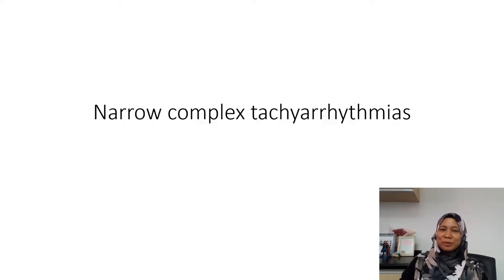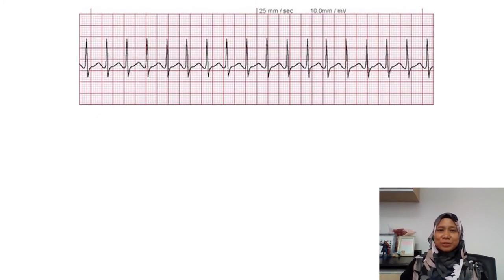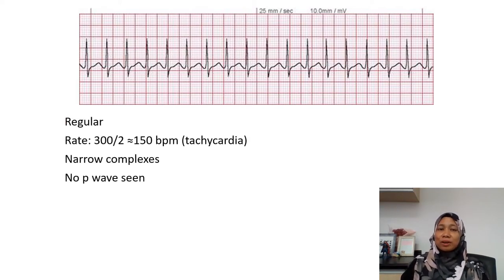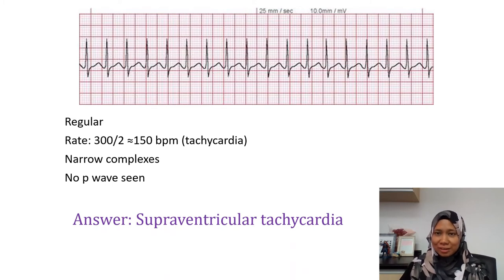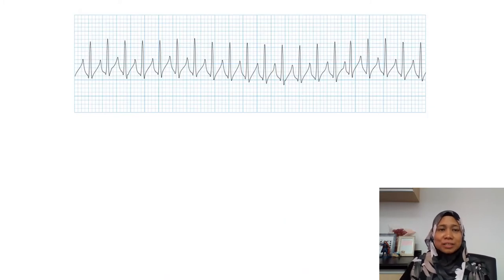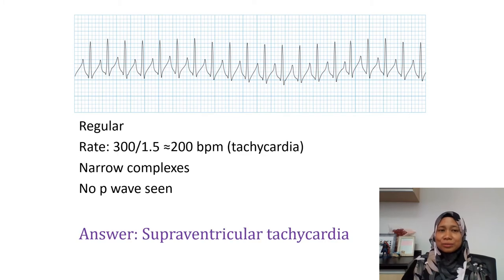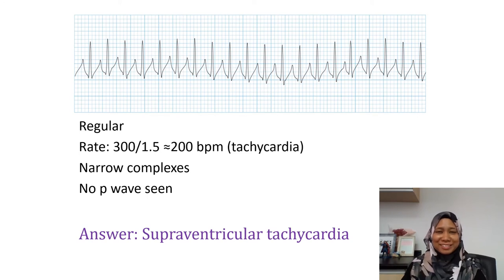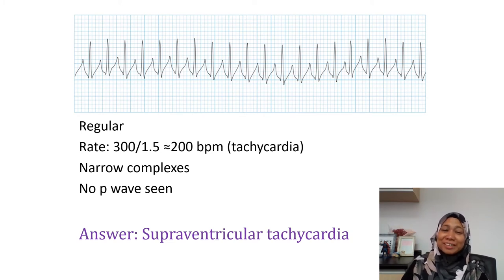Now let's go to narrow complex tachyarrhythmias. The first ECG strip is regular, about 150 beats per minute, narrow complexes, and no P waves seen — this is supraventricular tachycardia. The second strip is also regular, at about 200 beats per minute, narrow complexes, and no P waves seen — this is also supraventricular tachycardia.